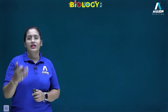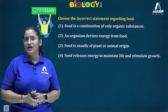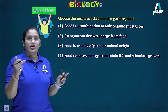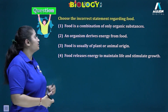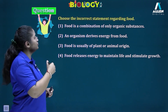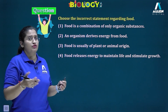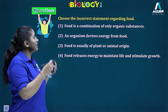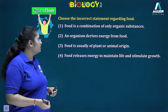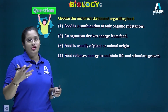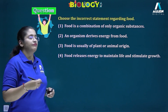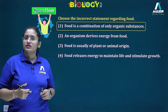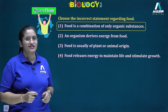Now we are going to look at some Olympiad practice questions. The first question asks us to choose the incorrect statement. Statement one says food is a combination of only organic substances — this is incorrect because food is a combination of organic as well as inorganic substances. The other statements are correct, so the answer is option number one.